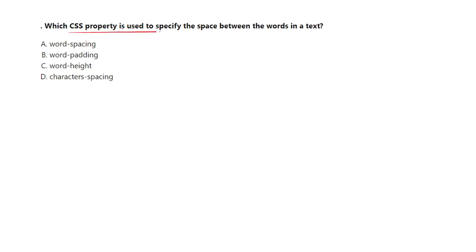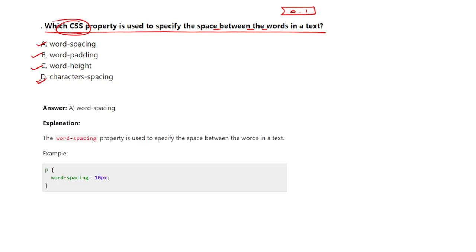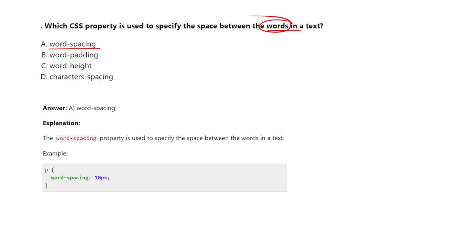The next question is: which CSS property is used to specify the space between the words in a text? You can see the space between words is approximately 0.1. If you want to increase, decrease, or specify particular spacing, what property should you use? Options are: word spacing, word padding, word height, or character spacing. The correct answer is option number one — word-spacing.